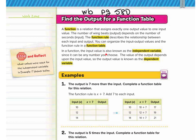In a function, the input value is also known as the independent variable, since it can be any number you choose. The value of the output depends upon the input, so the output value is known as the dependent variable, because the output is dependent on the input.